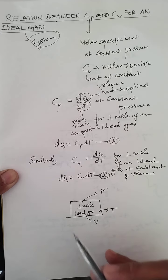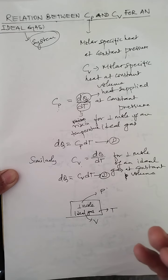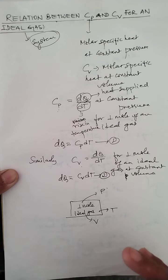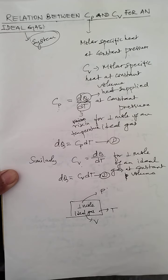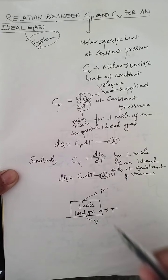Now I am going to heat this gas — supply heat to it — so that we raise the temperature by a very small amount dT. To increase the temperature by this small amount, we consider two separate cases: first, keeping the volume of the gas constant, which is called an isochoric process; second, keeping the pressure constant, which is called an isobaric process.